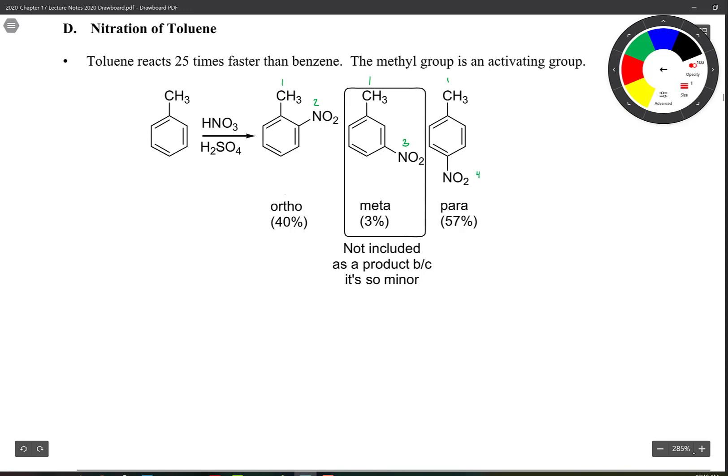When you look down below, the major products are ortho and para. Meta here is only 3 percent. So typically we would not ever include this as being a potential product for nitration.